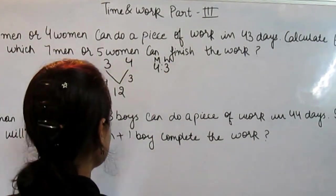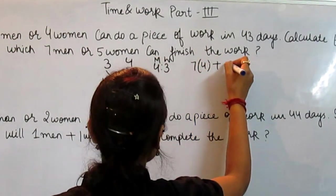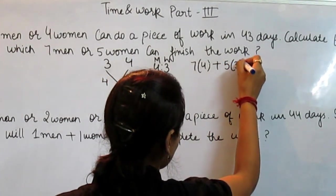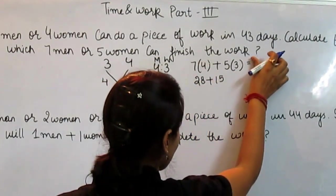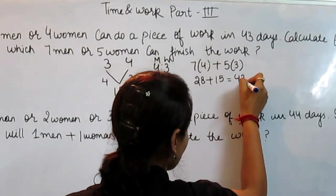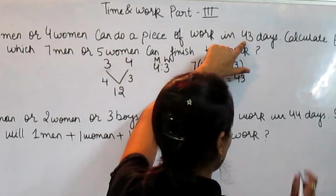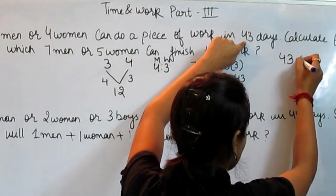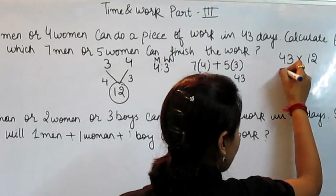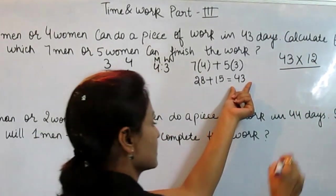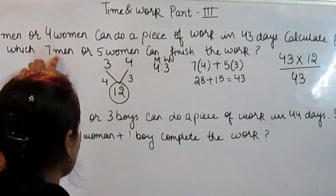Now put this ratio in this equation: 7 men plus 5 women. What we get? We get 28 plus 15, that is 43. Now the next step is we write down this work multiplied by this total work and divide it by this.